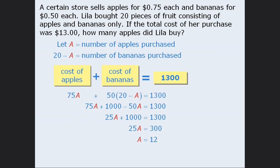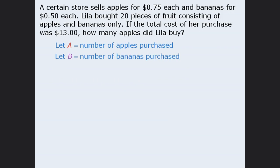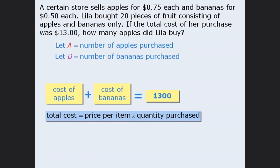Notice that an important step here was to recognize that if A equals the number of apples, then the number of bananas must equal 20 minus A. If we were unable to recognize that, we could also solve the question by using two variables. To begin, let A equal the number of apples purchased and let B equal the number of bananas purchased. We'll use the word equation and apply the formula to determine the total cost of the apples and the total cost of the bananas. The total cost of the apples will be 75A, the total cost of the bananas will be 50B, and these two costs must add to 1,300 cents.